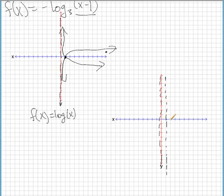So it's going to cross at 2, and we're going to have another point at 4, negative 1. And it's going to look like this.